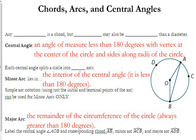That first line there says any diameter is a chord, but chords may also be shorter than a diameter. So a chord just connects, we wrote down this definition on Thursday, a chord connects two points on a circle.